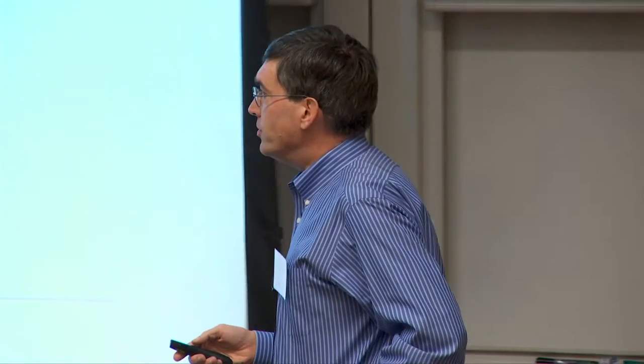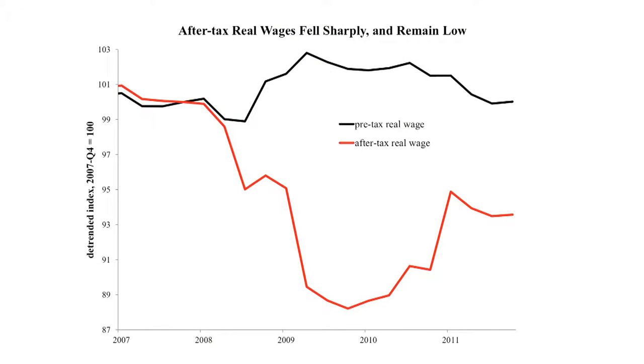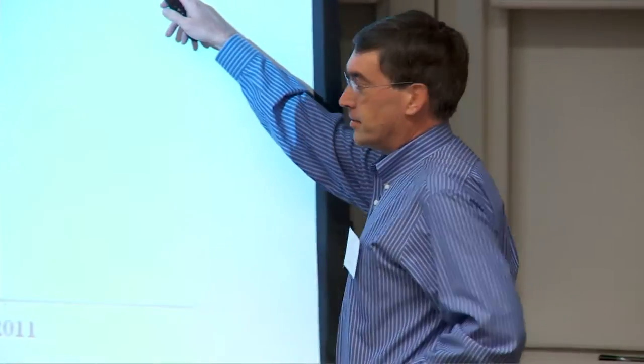Maybe I'll whet your appetite with some data on wages. These data are de-trended and put on an index scale. The black series are pre-tax wages from 2007 to the end of last year, and the red series is after-tax wages. Notice the scale here goes down to 87. Some people look at that black series and say they see downward pressure on wages. But my point today is whatever downward pressure that is, it's tiny compared to what happened to the red series. After-tax wages fell 11%, 12%, at its lowest, and even by the end they were down 6%, 7%.